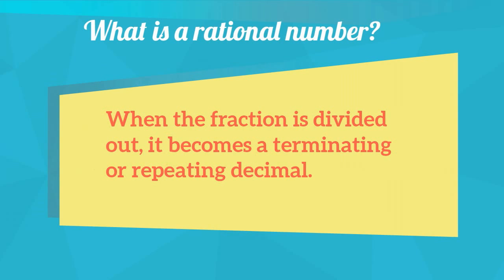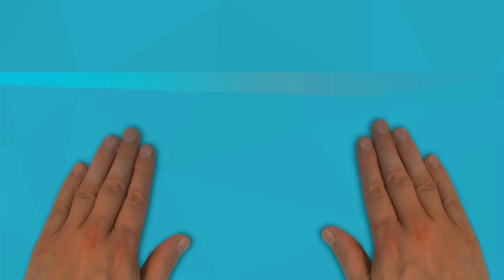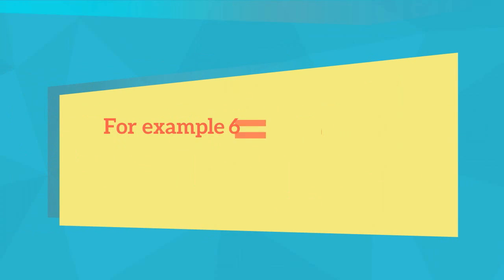When the fraction is divided out, it becomes a terminating or repeating decimal. Here are some examples of rational numbers: 6 equals 6 over 1, negative 3, negative 3 over 1.